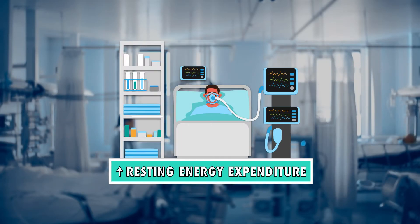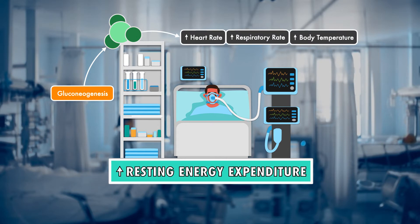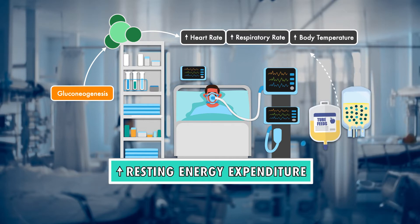Tied into these factors can be an overall increase in resting energy expenditure. Some of the glucose made available through gluconeogenesis gets used to support the metabolic demand of changes like an increased heart rate, an increased respiratory rate, and an increased body temperature. Ideally, we'd be able to satisfy this increased demand for energy through the provision of exogenous carbohydrate and fat, but there are challenges to accurately estimating energy needs.